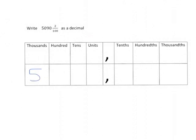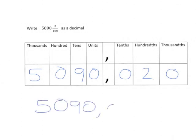Five thousands, no hundreds, nine tens, no units. There aren't any tenths in this case, there are two hundredths and no thousandths. Again, we're not going to have to write the final zero so we just write 5090,02.